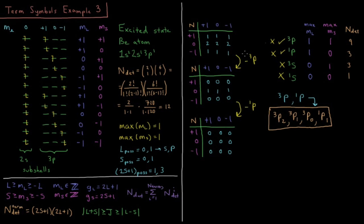So for triplet P, M sub L goes from plus L to minus L. M sub S goes from plus S to minus S. So for M sub L, we need plus 1, 0, and minus 1. For M sub S, we need plus 1, 0, and minus 1. And we need all combinations of all three values. So there are 2L plus 1 values of M sub L, 2S plus 1 values of M sub S. So the number of determinants that belong to a term symbol is going to be 2S plus 1 times 2L plus 1, or 9 total values.